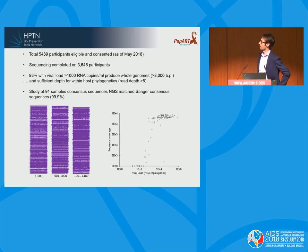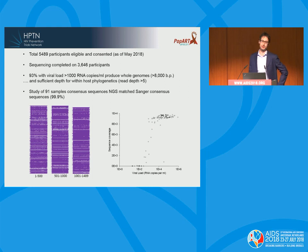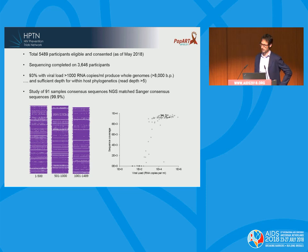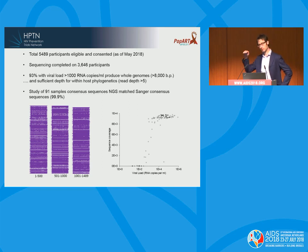To date, we've recruited 5,500 participants and completed sequencing on 3,646 of these. The complete purple lines in the figure represent whole genomes obtained for each. A few white spots represent sequences we haven't managed to get, but a proportion of recruits are not viremic, so we wouldn't expect all of them. The cutoff for a successful whole genome sequence is just under 1,000 copies per milliliter.